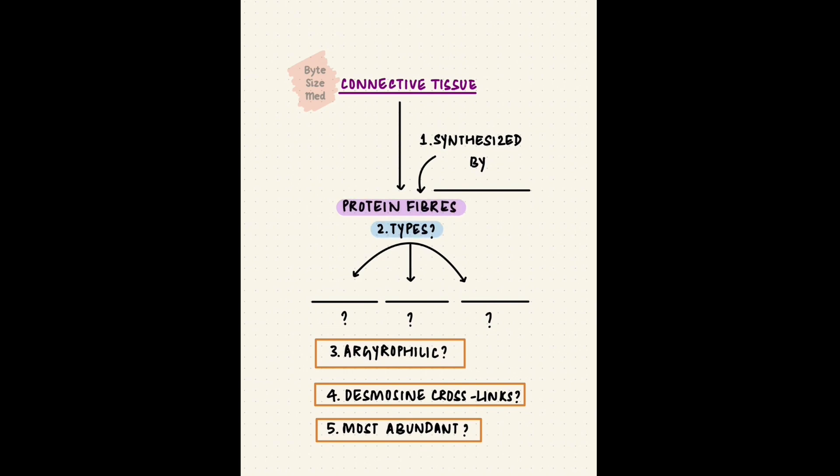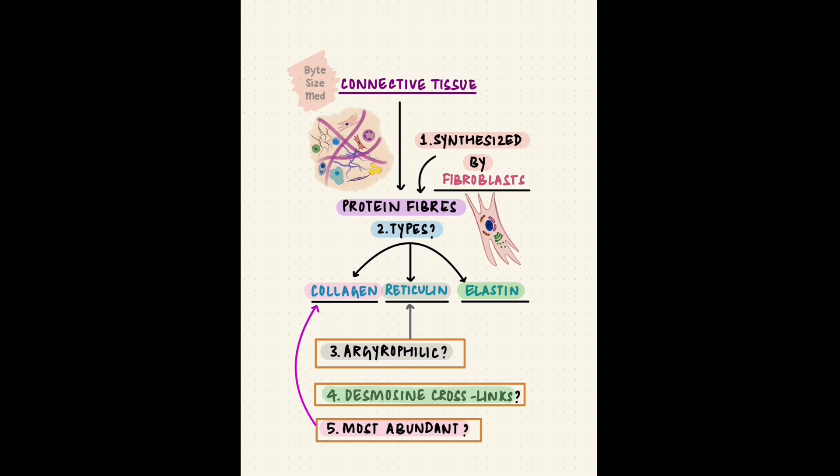There are three main protein fibers in connective tissue. Collagen, reticulin, and elastin. The proteins for these fibers are synthesized by fibroblasts. Collagen is the most abundant, also making it the most abundant protein in the body. Reticular fibers are argyrophilic, meaning they stain black with silver stains. And elastin is the one with desmosines and cross links.